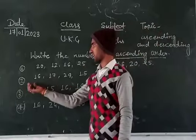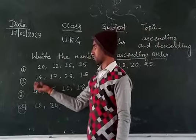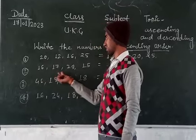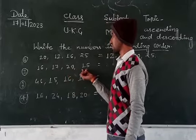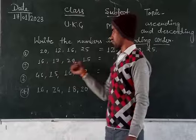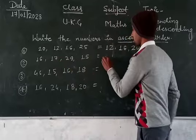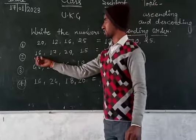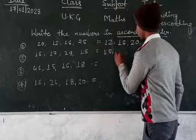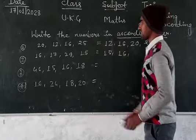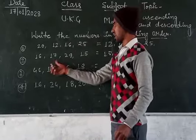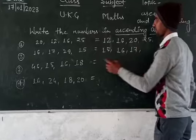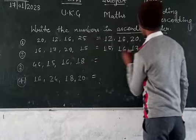Question number 2. The numbers are 16, 17, 29, and 15. The smallest number is 15. Then the next biggest number is 16, then 17, then 29.